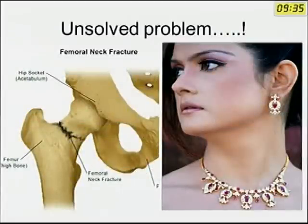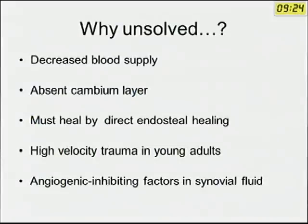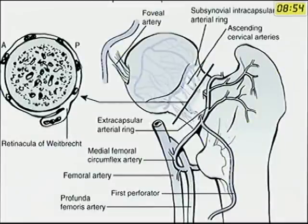Fracture Neck of Femur is as unsolved a problem as the neck of the ladies. Why is Fracture Neck of Femur an unsolved problem? Because of the decreased blood supply, absent cambium layer of the periosteum, and this has to heal by direct endosteal healing. Because of the high velocity of trauma in adults, these factors contribute to non-union, and the angiogenic inhibiting factors in the synovial fluid continuously bathe the fracture, reducing the chance of union. This picture depicts the circulation of the neck and head of the femur, where the Medial Circumflex Femoral Artery and the Retinacular vessels on the posterior aspect are important.